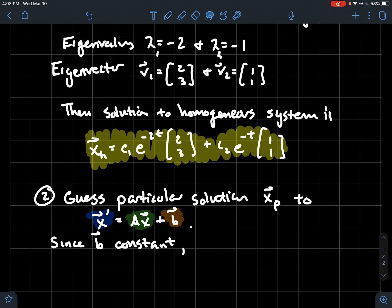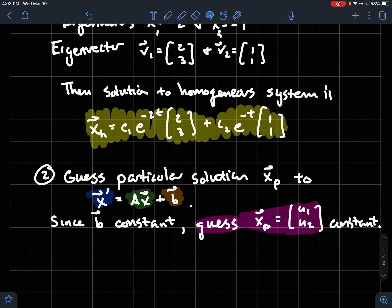It's not going to work every time, but it's a good place to start. Since b is a constant, I'm going to guess that a particular solution to that inhomogeneous system is just a constant vector u1 u2, where u1 and u2 are just numbers, not like functions sine and cosine or something like that.